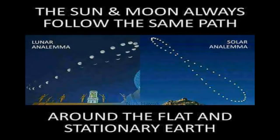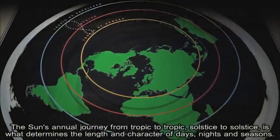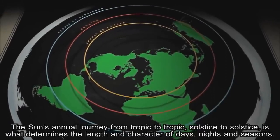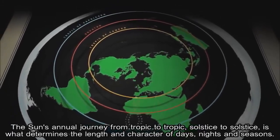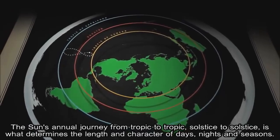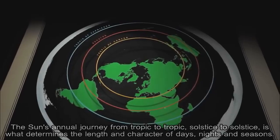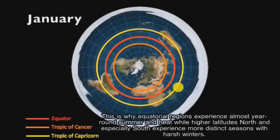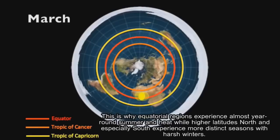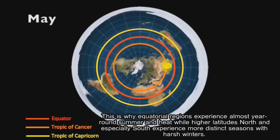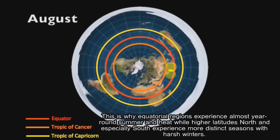In the Flat Earth model, the Sun and Moon luminaries revolve around the Earth once every 24 hours for the Sun and approximately 25 hours for the Moon, illuminating like spotlights the areas over which they pass. The Sun's annual journey from tropic to tropic, solstice to solstice, is what determines the length and character of days, nights, and seasons. This is why equatorial regions experience almost year-round summer and heat, while higher latitudes north and especially south experience more distinct seasons with harsh winters.